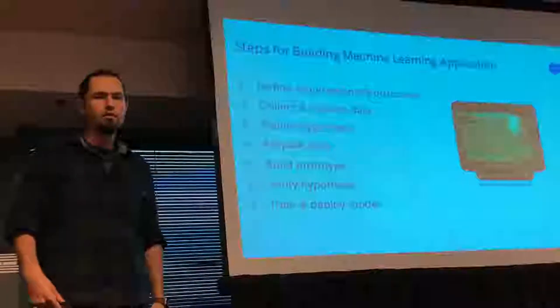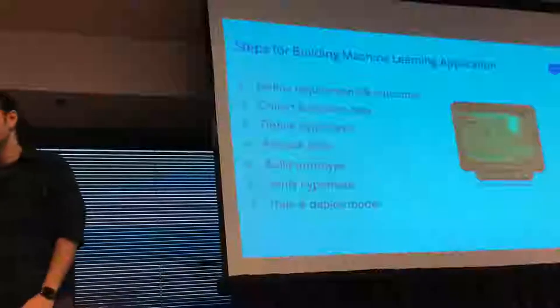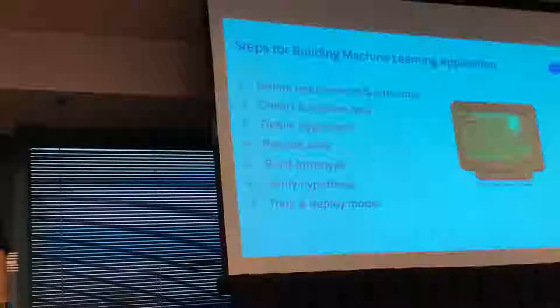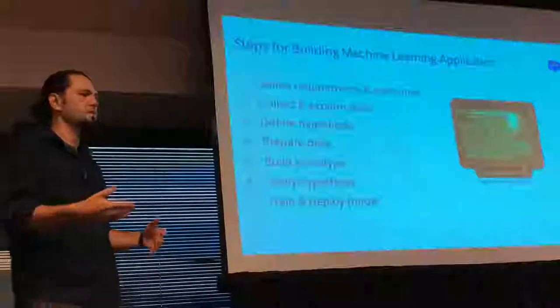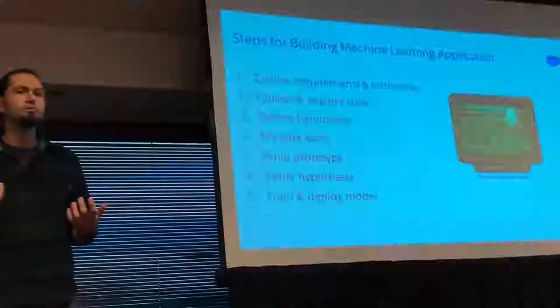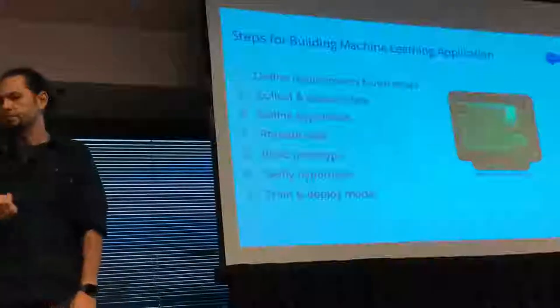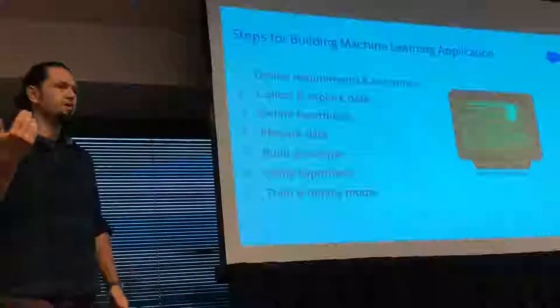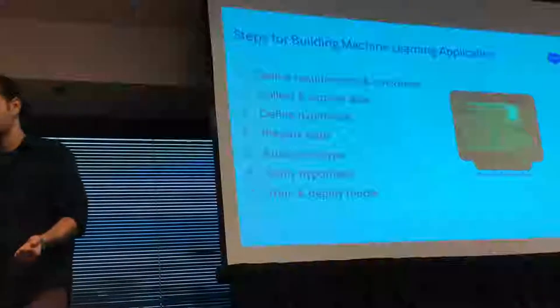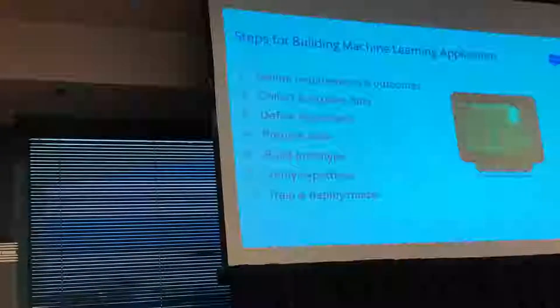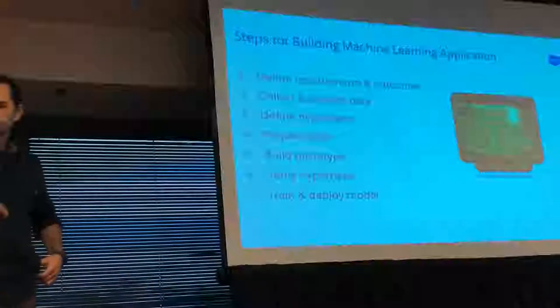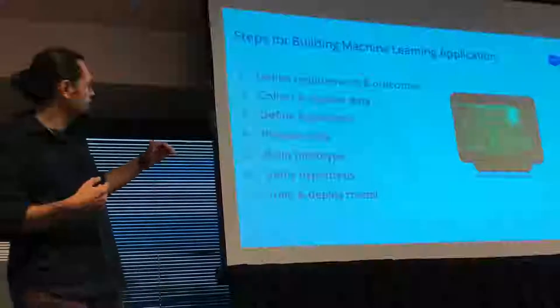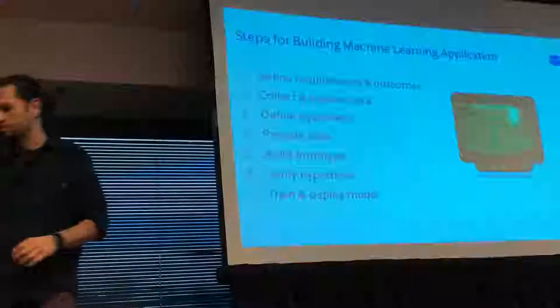In general, this is what machine learning engineers and data scientists do. We first define product requirements, then step into the problem by collecting data, maybe running some A/B tests, exploring in notebooks. We define our hypothesis — will this increase or decrease the KPI? Will this improve or increase the churn of users? We do some data preparation, build a prototype, verify the hypothesis, then train and deploy. And we can loop through this multiple times.